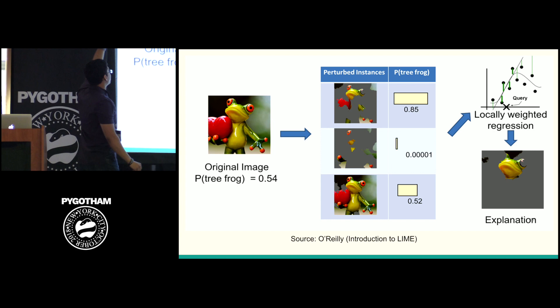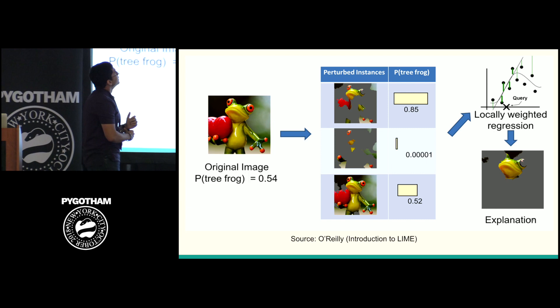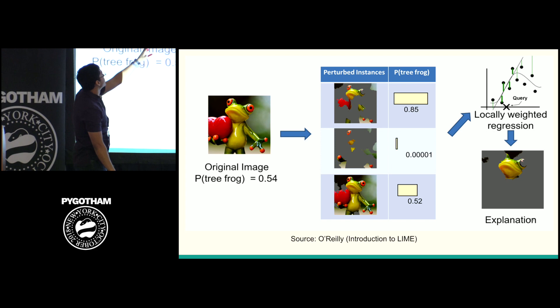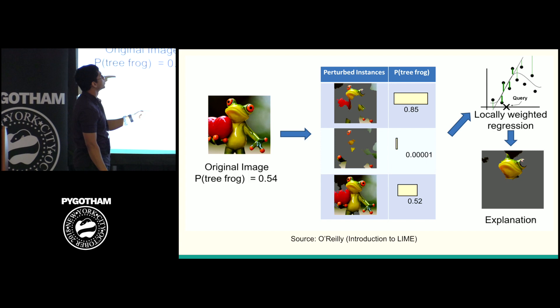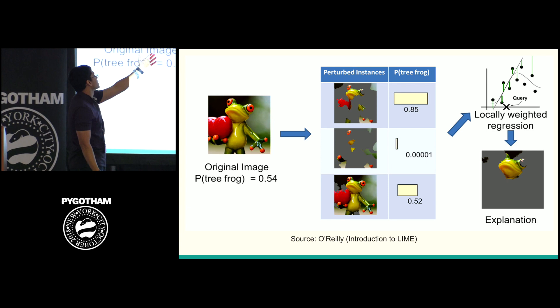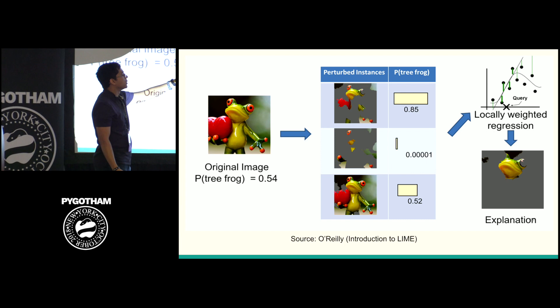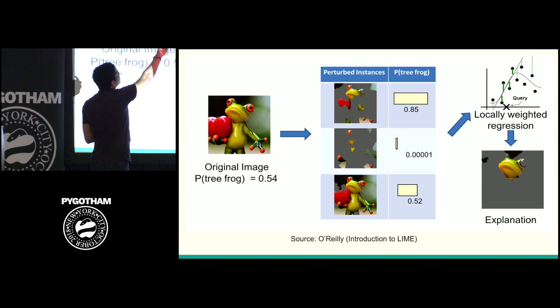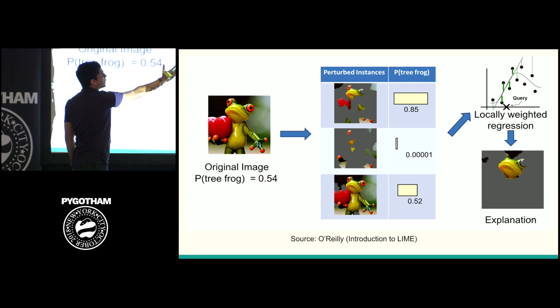To give an example, let's say we have this picture of a frog holding a heart. We're going to perturb it — gray out some pixels of the image — and generate three new images. We run each through the classifier asking: what probability is this a tree frog? We get the probabilities, fit a linear regression, and extract the most important parts for predicting this to be a tree frog. When we zoned out almost everything but kept the head intact, we still say it's a tree frog with high probability. So the head and eyes are why we say this is a tree frog.